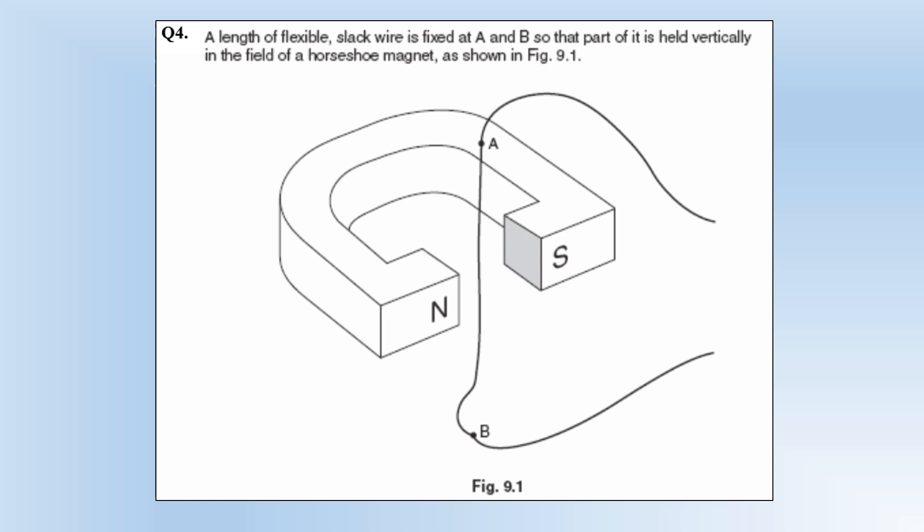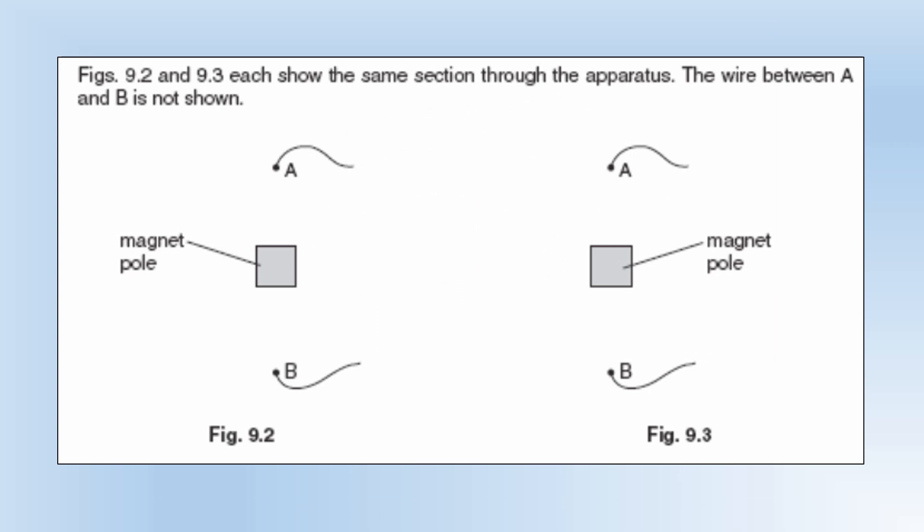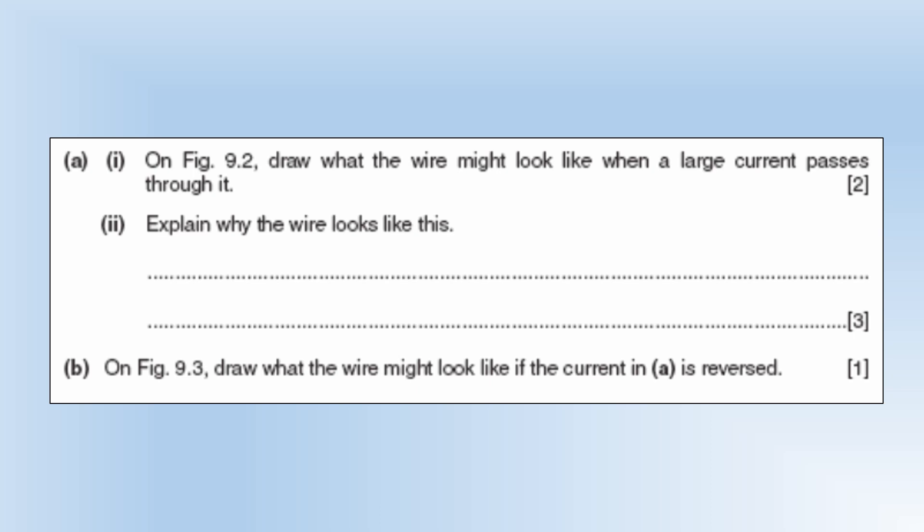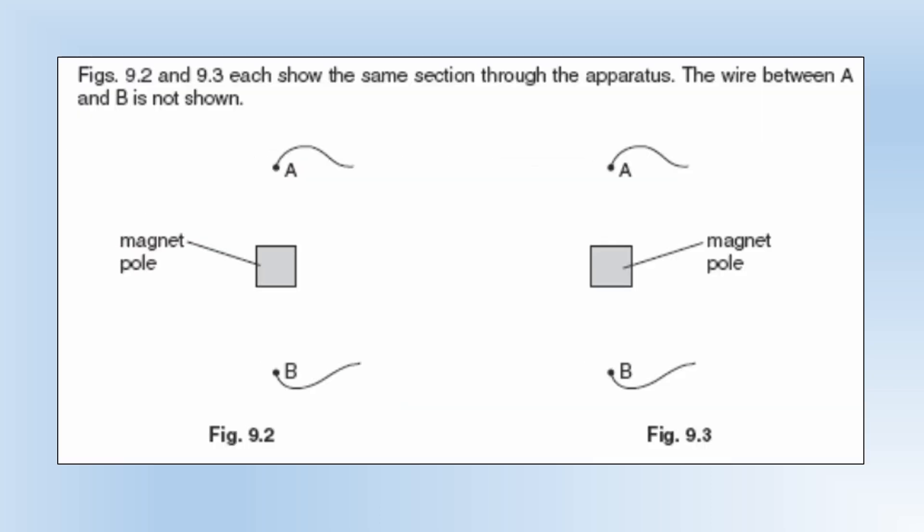A length of flexible slack wire is fixed to A and B so that part of it is held vertically in the field of a horseshoe magnet as shown. The diagrams each show the same section throughout the apparatus but the wire between A and B is not shown. And the reason is because we're going to draw that in. On the diagram draw what the wire might look like when a large current passes through it. So A and B are both fixed so the wire isn't going to be able to physically move but what's going to happen is it would bend. And it could bend to the left as well we're not told which direction the field is in or the current is or anything. But it's going to bend or distort in this kind of way.